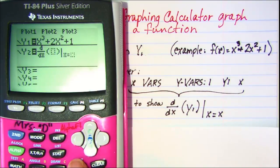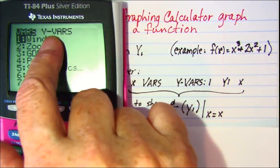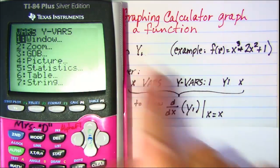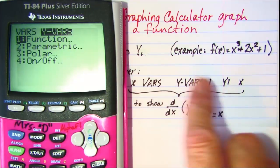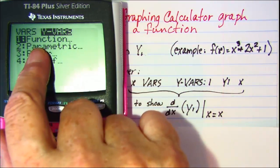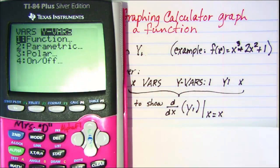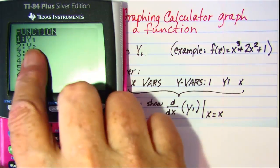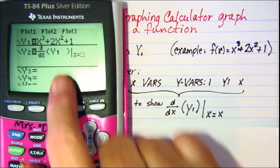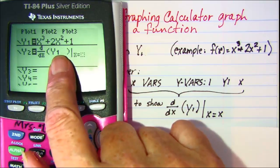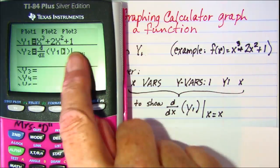So right in this space we want an x, and then in the parentheses we wish to put y1. Now the way you get to that is you press the variables key which is VARS right next to the clear key. So hit the variables key and then you need to move over until you hit the y variables.